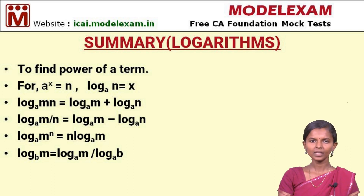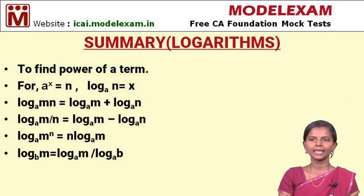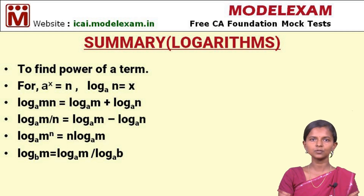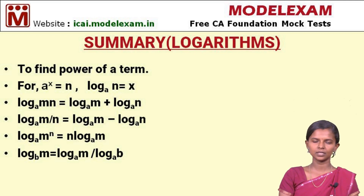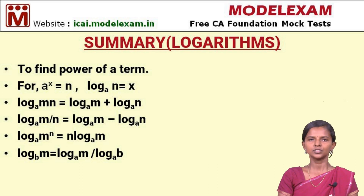If there are powers in the logarithmic value, we bring the power to the front as a multiplier. So log M power N to the base A is written as N into log M to the base A. The last point is log M to the base B equals log M to the base A divided by log B to the base A — here we change the base to a common value using this formula. This is the end of the chapter.